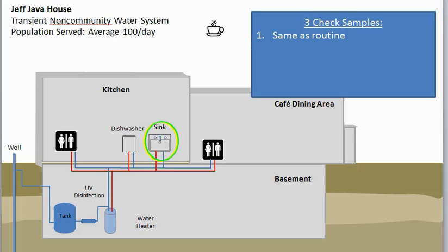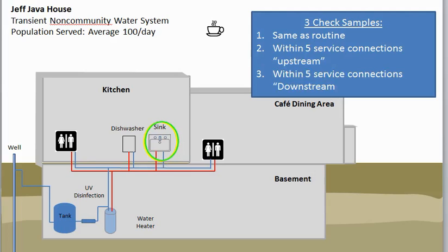After a coliform positive, three check samples are required, and these locations have to be identified in the sample siting plan. One of the check samples is always the routine location — so the kitchen sink for the Java House. According to the regulation, one check sample should be collected at a tap within five service connections upstream and one within five connections downstream. In the case of a single-connection building like the Java House, you simply identify locations on either side of the routine location. We have two bathrooms — one in the kitchen area and one in the dining area — so we'll identify these as our check sample locations.